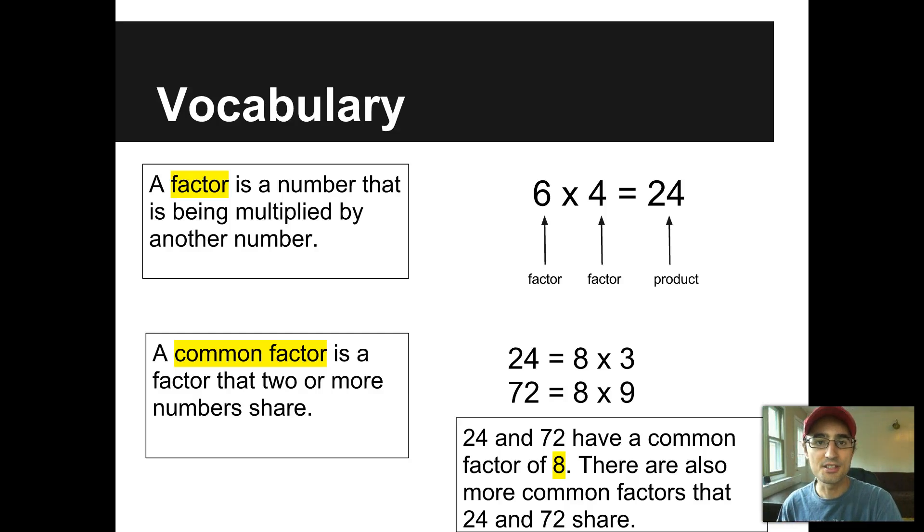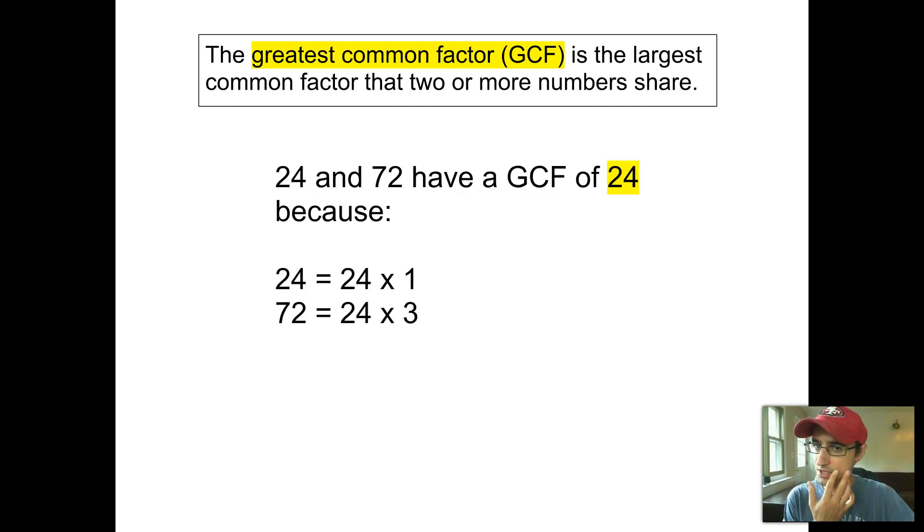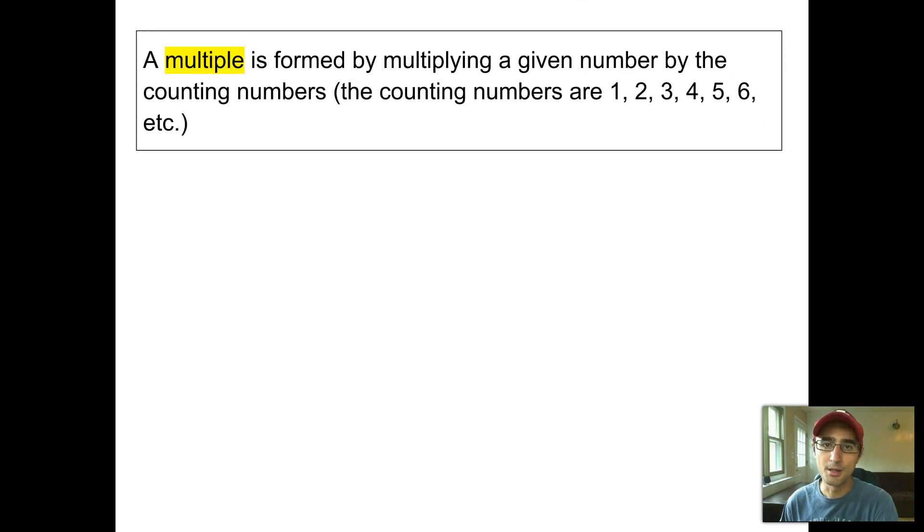So 24 and 72 have a common factor of 8. There are also more common factors that 24 and 72 share. We're going to talk about many common factors, but we're going to want to go and pick the largest one. And that brings us to the next part. The greatest common factor or GCF. It's the largest common factor that two or more numbers share. So if we go back to 24 and 72, they have a greatest common factor of 24. Now remember, 8 was a common factor, but not the largest one. 24 is the greatest common factor. 24 equals 24 times 1. 72 equals 24 times 3. Notice that both of those numbers have a factor of 24 in them.